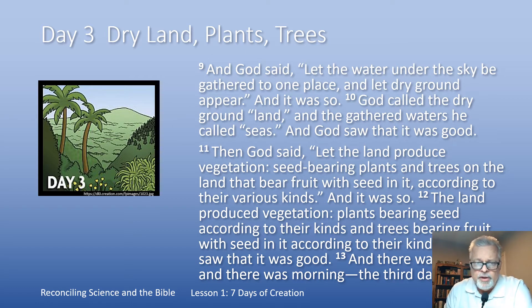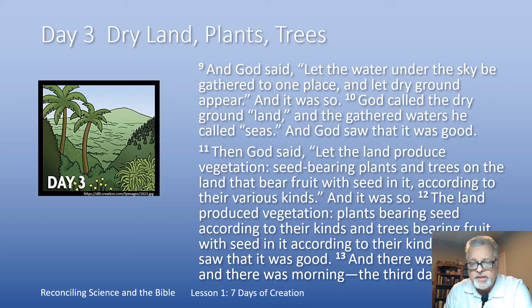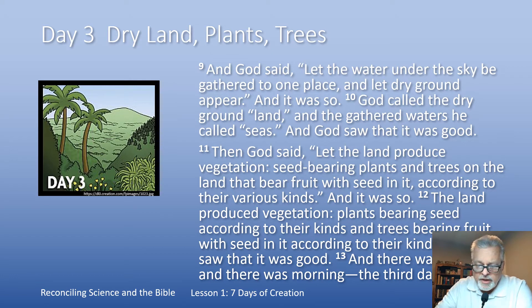On day three, dry land begins to appear along with plants and trees, but at this point, no animals. God said, let the water under the sky be gathered and let the dry ground appear. God called the dry ground land and the gathered waters seas. Then he said, let the land produce vegetation — seed-bearing plants and trees bearing fruit with seed in it according to their kinds. The land produced vegetation accordingly, and God saw that it was good. And there was morning and evening, the third day. Science says exactly the same things happened in the third eon.